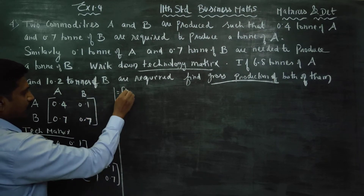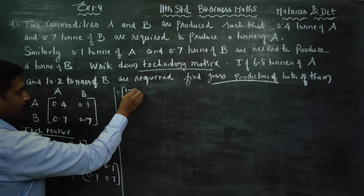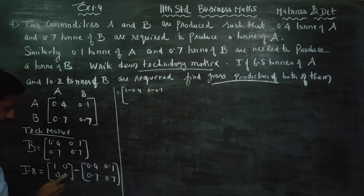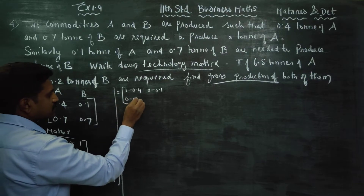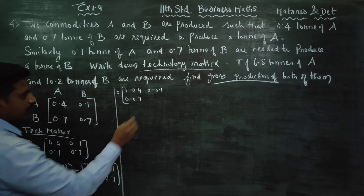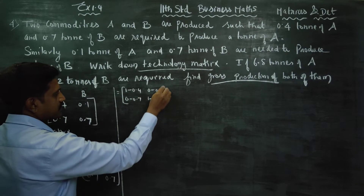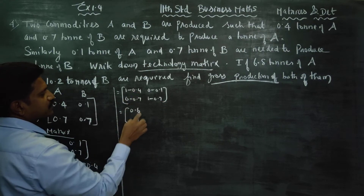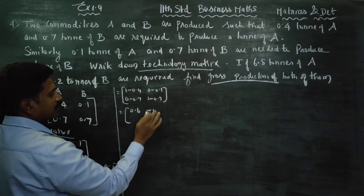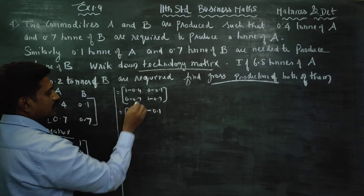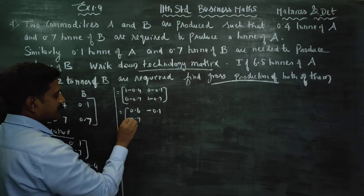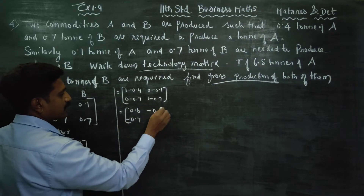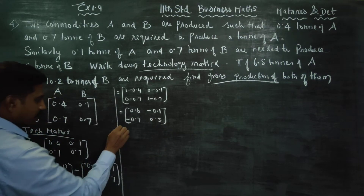You will be getting: 1 minus 0.4 = 0.6; 0 minus 0.1 = minus 0.1; 0 minus 0.7 = minus 0.7; 1 minus 0.7 = 0.3. So I minus B equals the matrix: 0.6, -0.1, -0.7, 0.3.